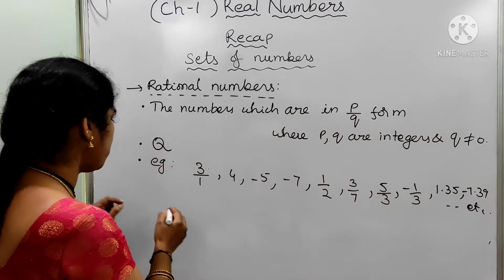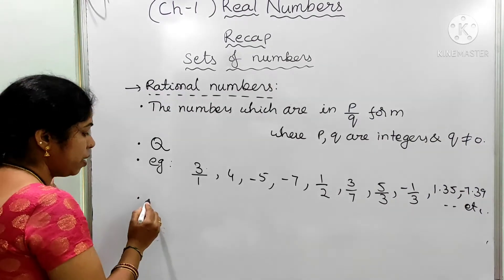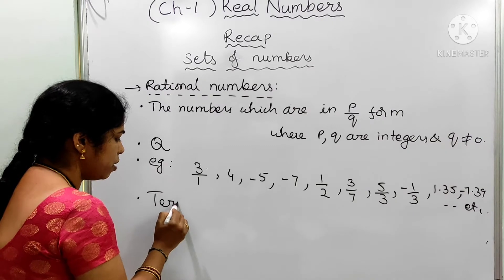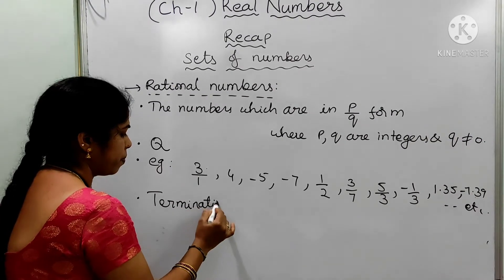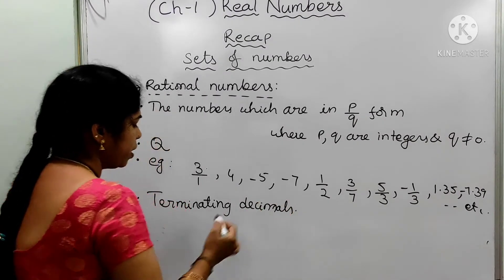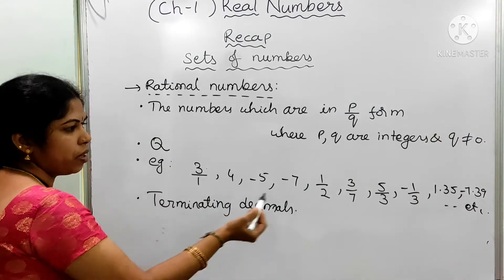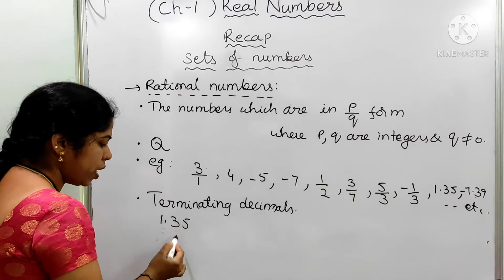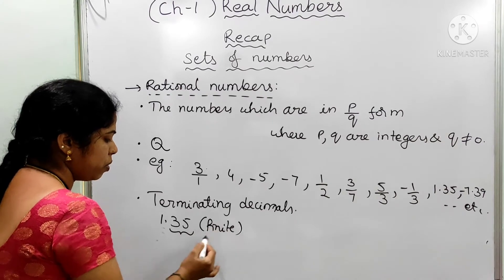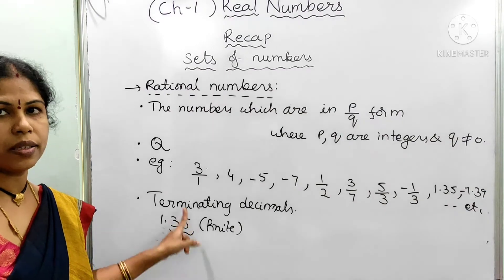One more point to remember: terminating decimal numbers are also called rational numbers. For example, 1.35 — in this, the decimal part is finite, so it is limited. Therefore, we can call 1.35 also as a rational number.